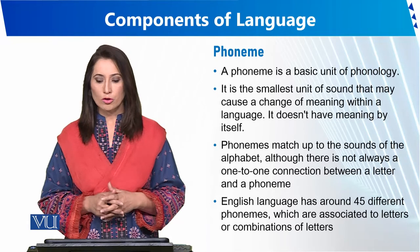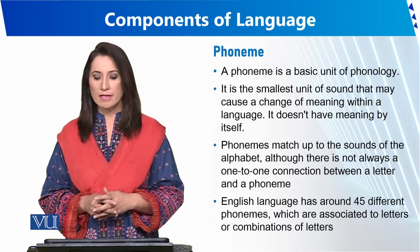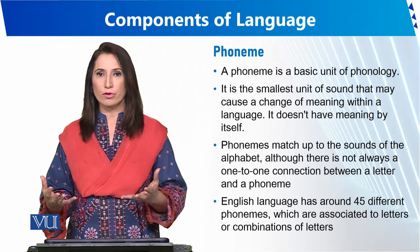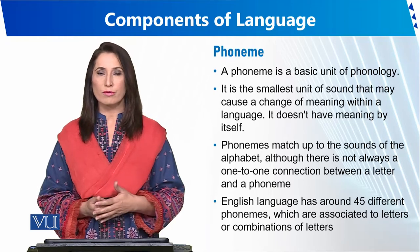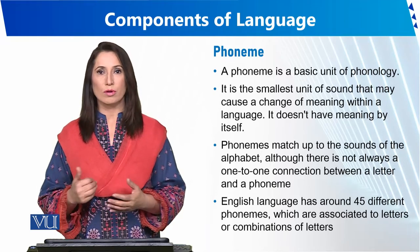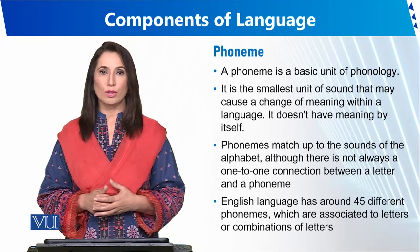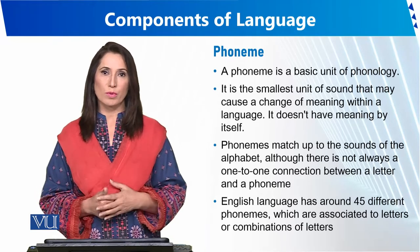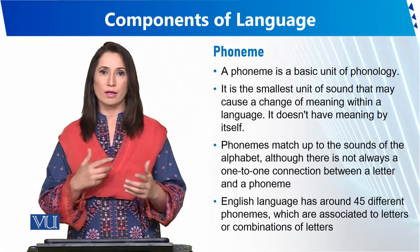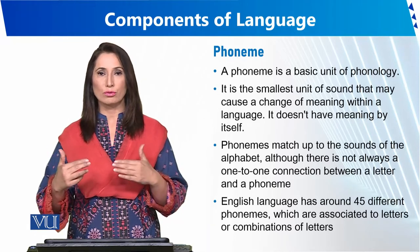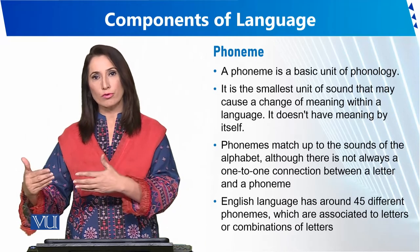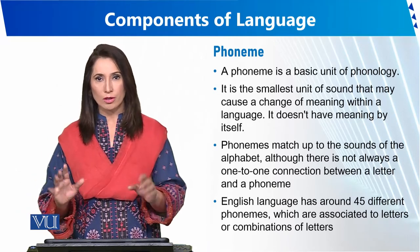The English language has around 45 different phonemes. These 45 phonemes are different from all words in terms of spelling and alphabet. There is a connection between phonemes and letters, but it is not essential that the number of letters exactly equals the number of phonemes.